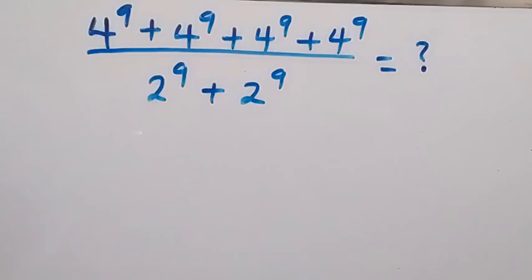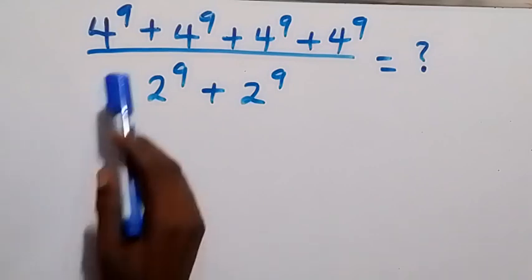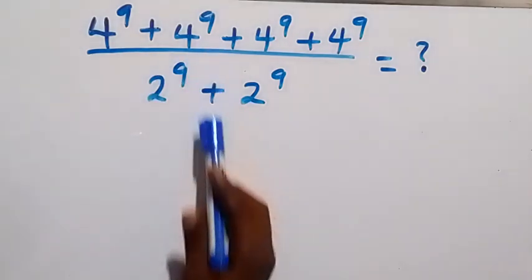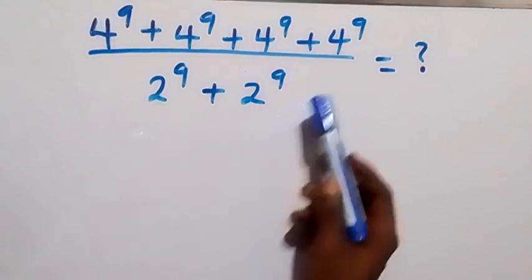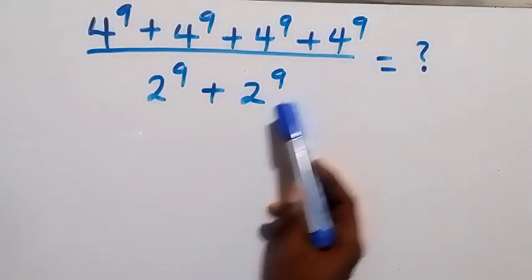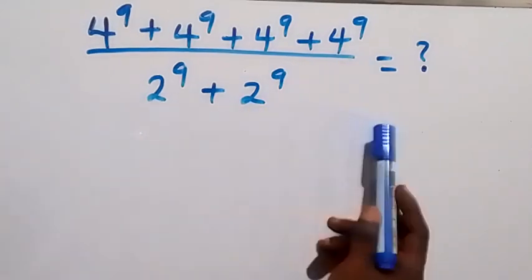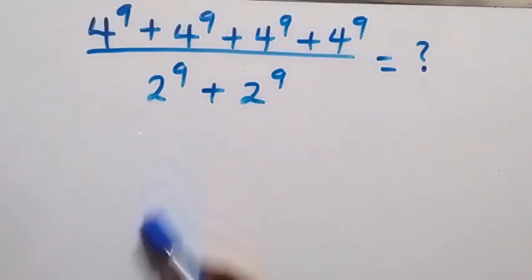Hello, you are welcome here. Let's solve this nice exponent problem. We have 4 raised to power 9 plus 4 raised to power 9 plus 4 raised to power 9 plus 4 raised to power 9, all over 2 raised to power 9 plus 2 raised to power 9.